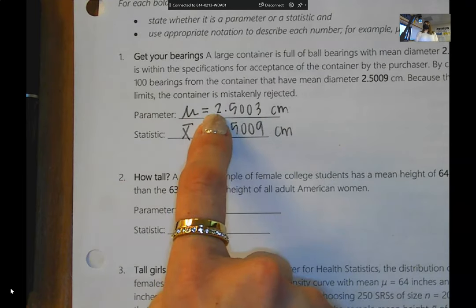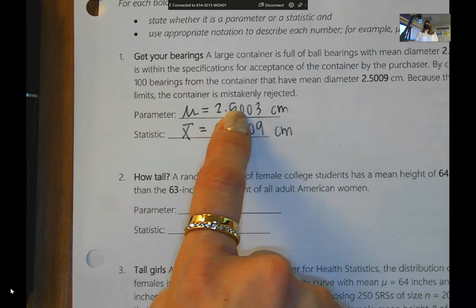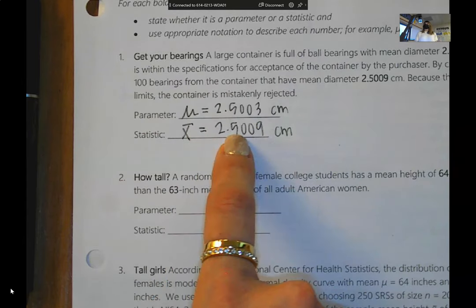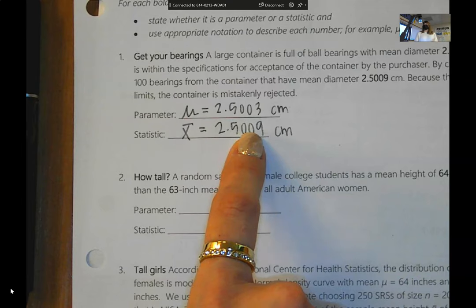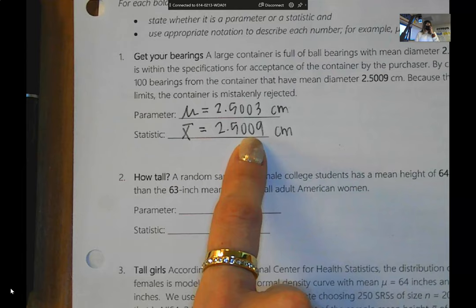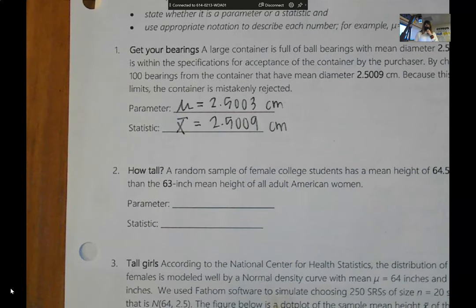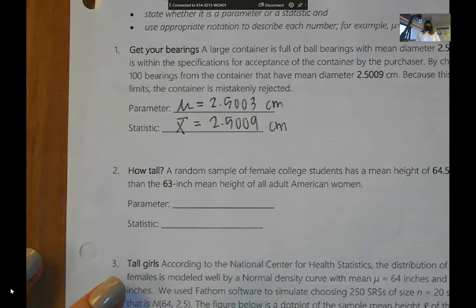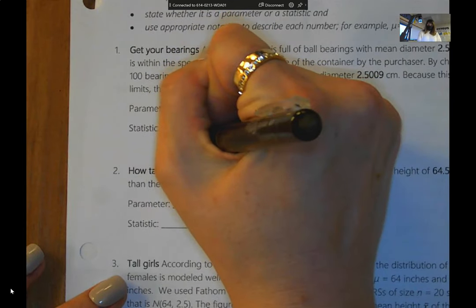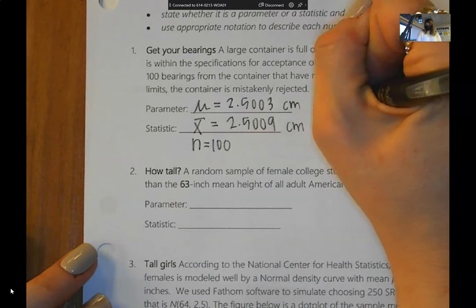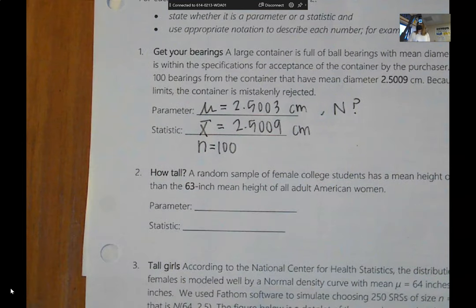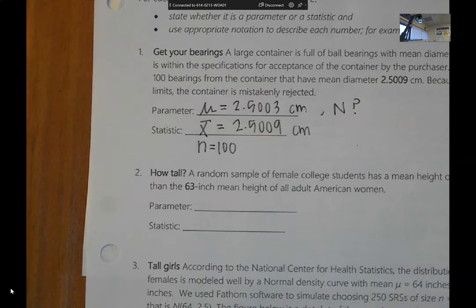So what a lot of companies do is they take samples to verify that their specifications are being met. You take a sample to verify that's what's happening, and this was your sample diameter. So N equals 100 is your sample size. We don't know what capital N is, and we don't need to know the population size. We just need to know what the average diameter should be.